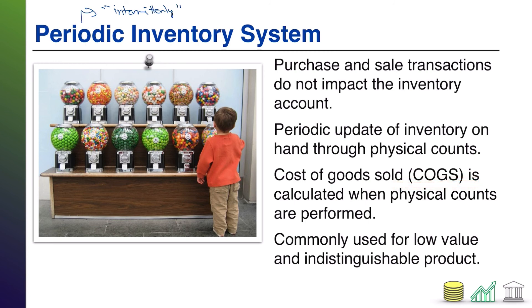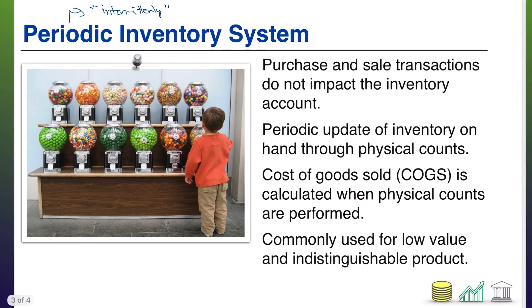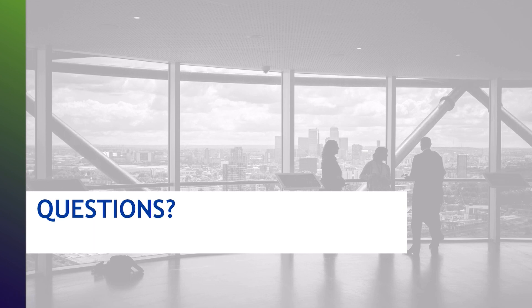You do a little math at the end of the period based on physical counts rather than tracking your cost of goods sold and your profit with each and every transaction. That was your primer on perpetual and periodic inventory systems. The last thing I'll tell you is that this is a company decision — neither one is wrong, it's just a choice of what a company wants to do. Also, computers make doing a perpetual system a lot more common in today's world. Hope you found this helpful. Hope you join me for another video.